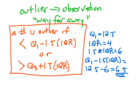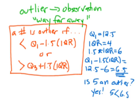So therefore, Q1 minus 1.5 times the IQR gets us 12.5 minus 6 gets us 6.5. So this number 6.5 is our threshold for being a small outlier. So anything less than that is an outlier. Is the number 5 an outlier? The answer is yes, because 5 is less than 6.5. 6 would have also been an outlier. 7 would not have been an outlier.